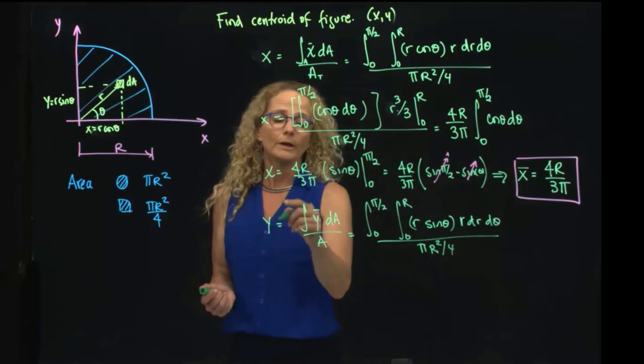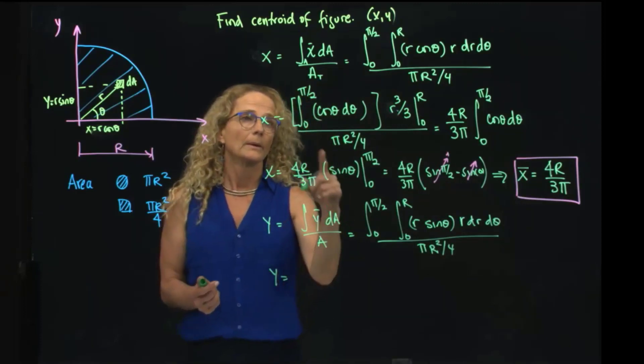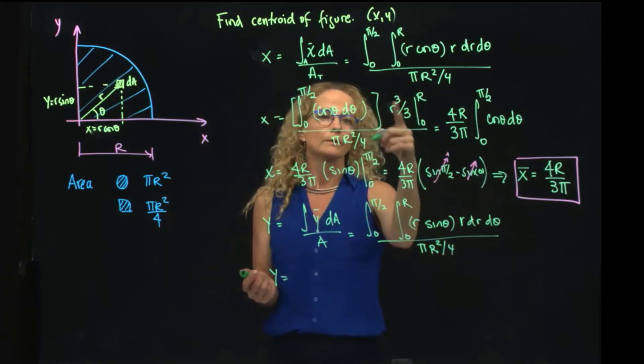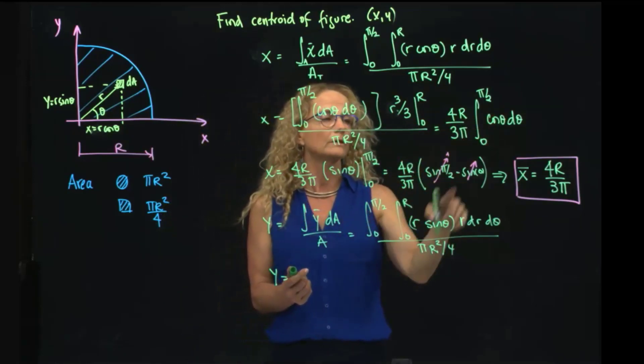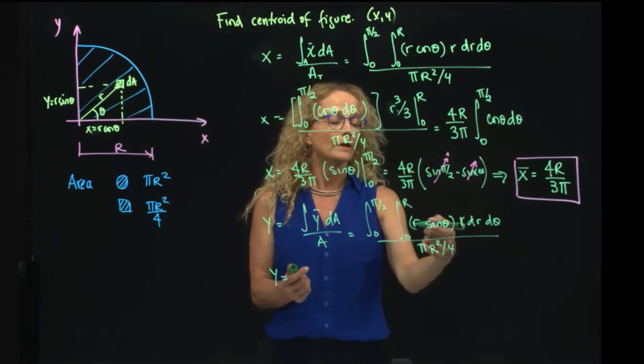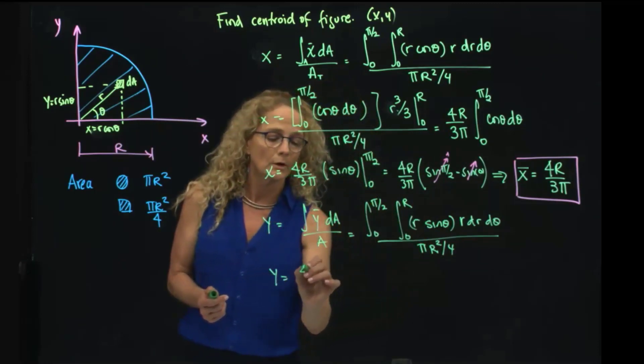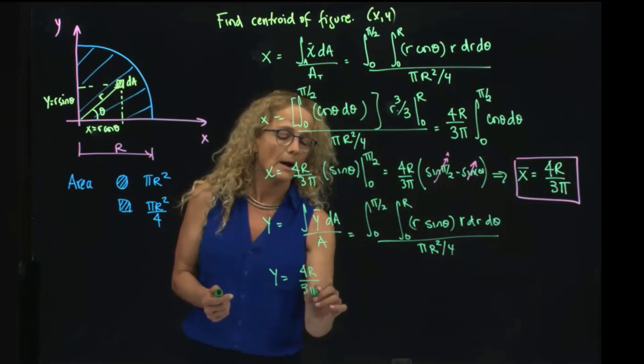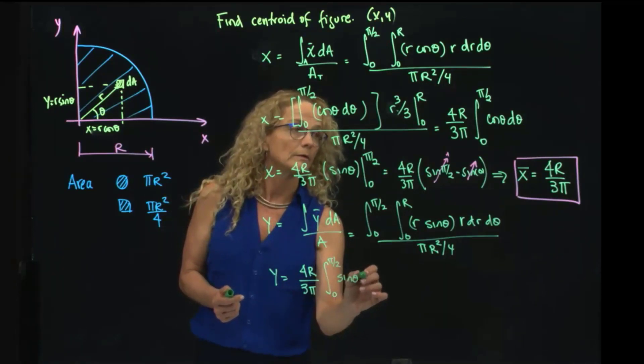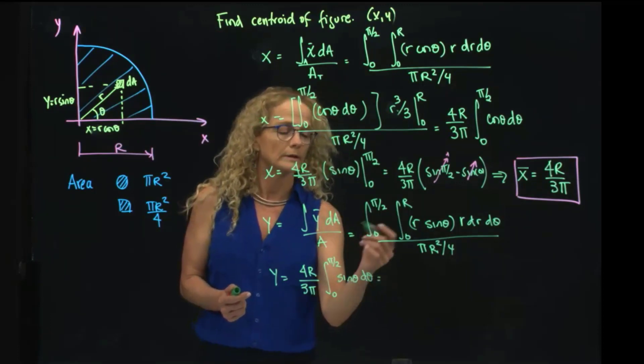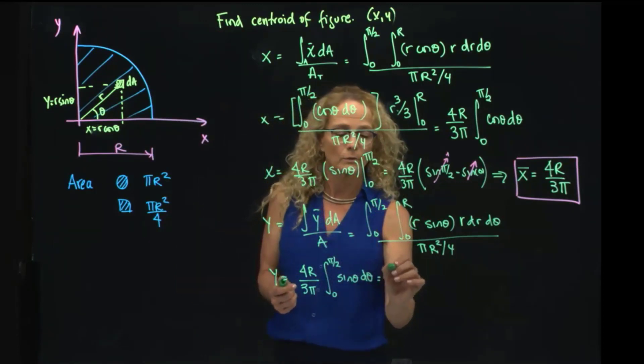As you see, I integrate over r, and it's very similar. The only difference is that here we have the integral instead of the cosine, we have the integral of sine, so that will give me 4r over 3 pi, the integral of 0 to pi half sine of theta dtheta, and you know that the integral of sine is the negative cosine.